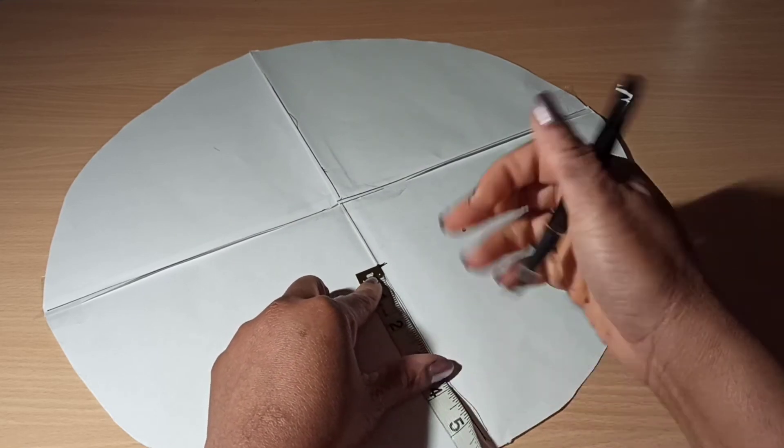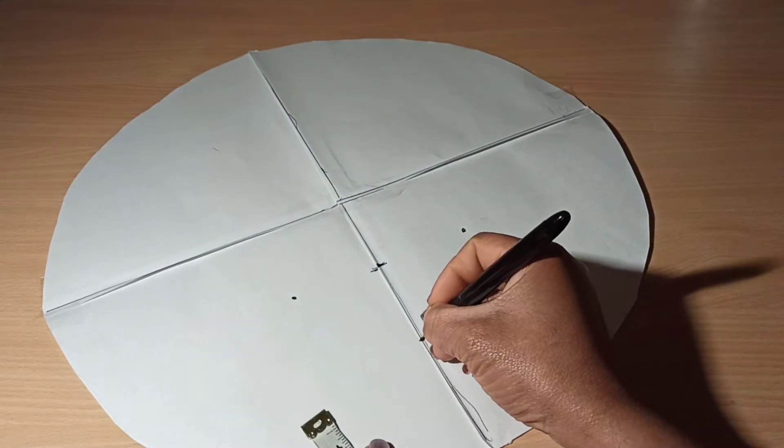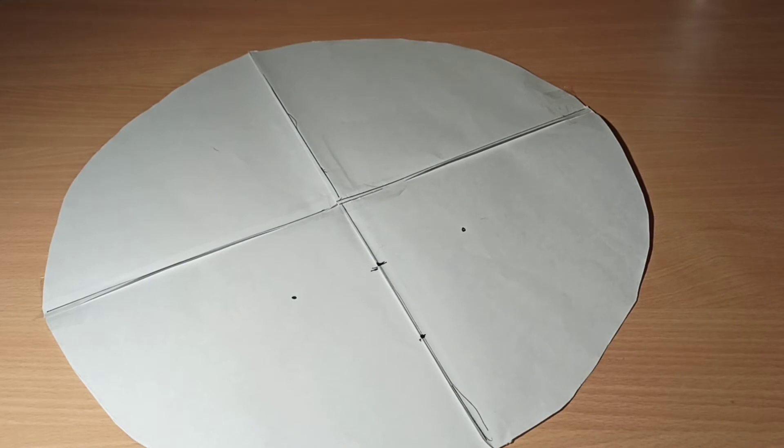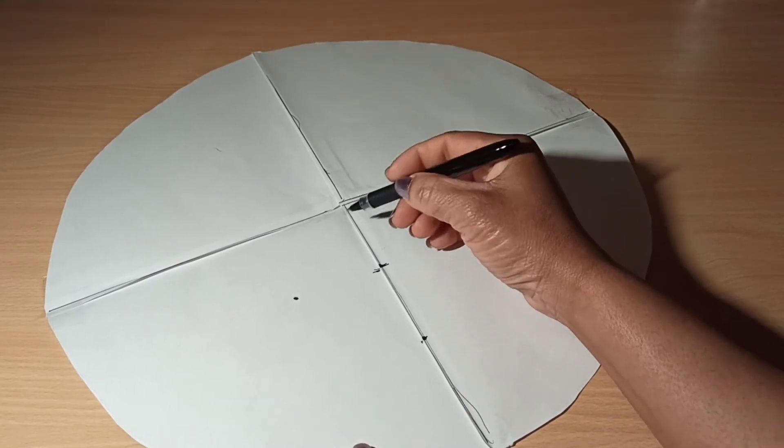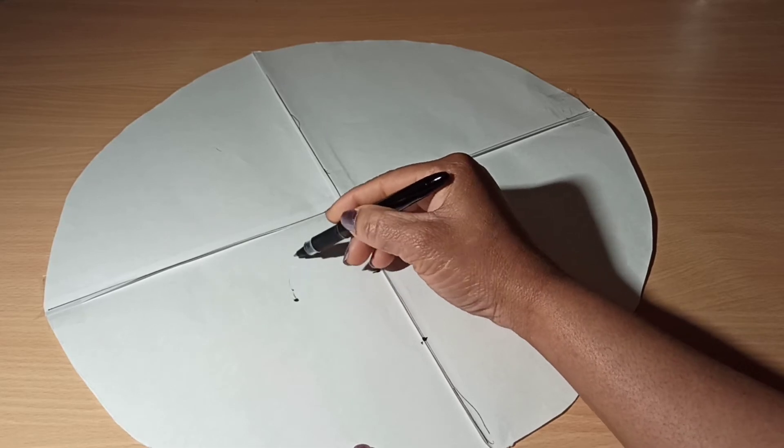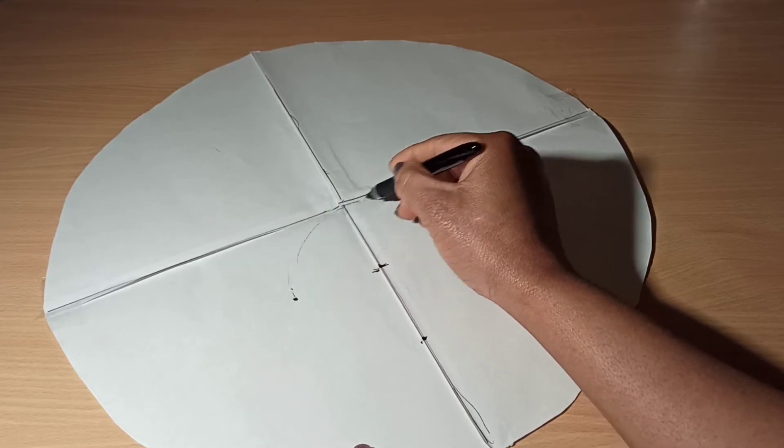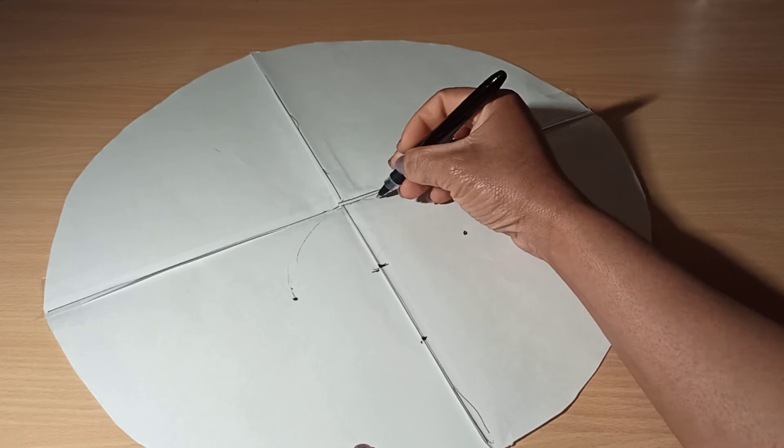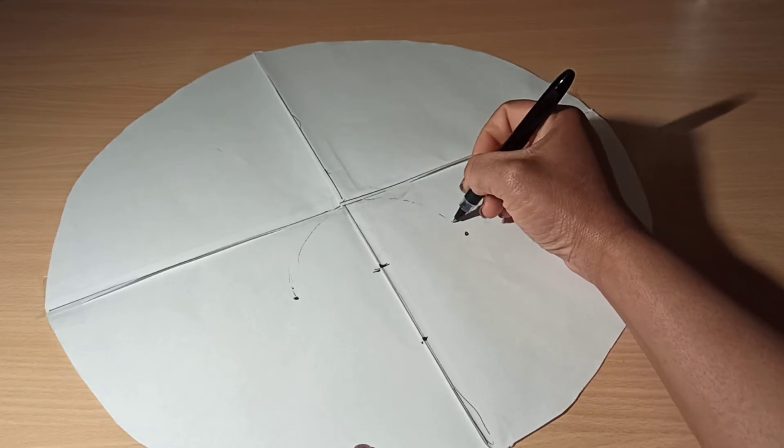From the midpoint of the circle, if you connect everything together, you should form another circle. You can use your curved ruler instead of drawing with your hand, but here I'm just drawing freehandedly.